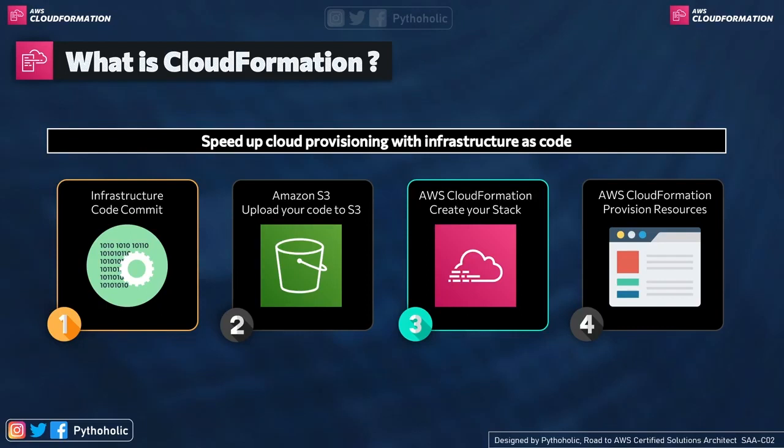Once you've made the decision, the last step is where you see the magic unfold — CloudFormation provisions your resources with the template you provided. So step one: write code. Step two: upload to S3 or use it from your local file. Step three: execute on CloudFormation. Step four: get the resources. It's very simple.